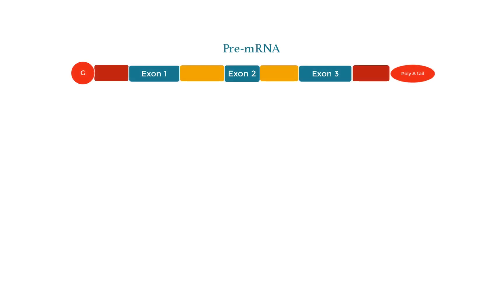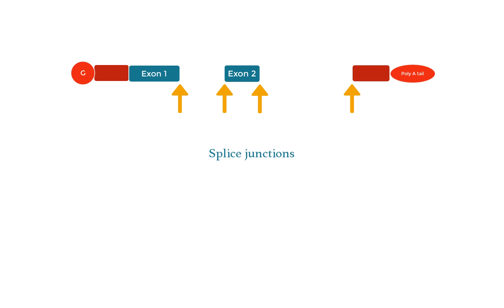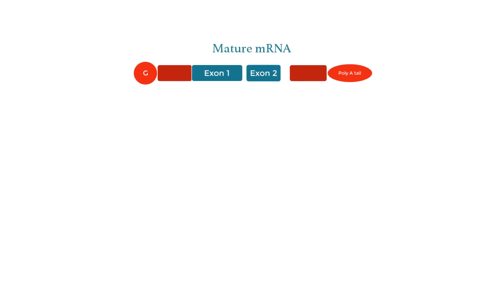Let's say that we want to understand the expression of a single gene. After being transcribed, the pre-mRNA of this gene is spliced to produce mature mRNA. Note that the genomic locations where the spliceosome cuts the pre-mRNA are called splice junctions, and notice that the introns, as well as the third exon, have been spliced out.